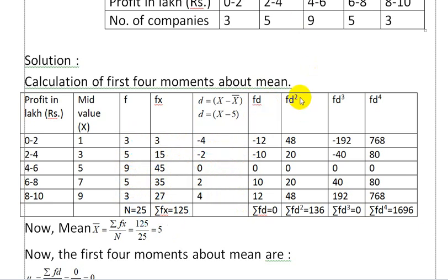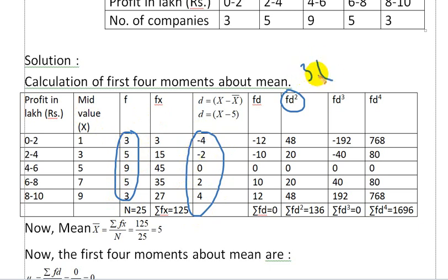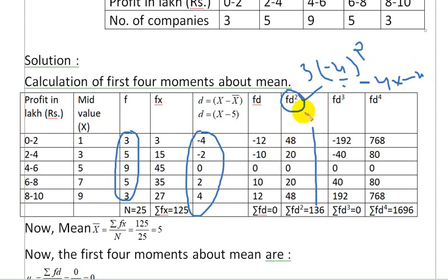Now we calculate fd squared. For f=3, d²=16: fd² = 48. For f=5, d²=4: fd² = 20. For f=9, d²=0: fd² = 0. For f=5, d²=4: fd² = 20. For f=3, d²=16: fd² = 48. Adding these gives the sum of fd².